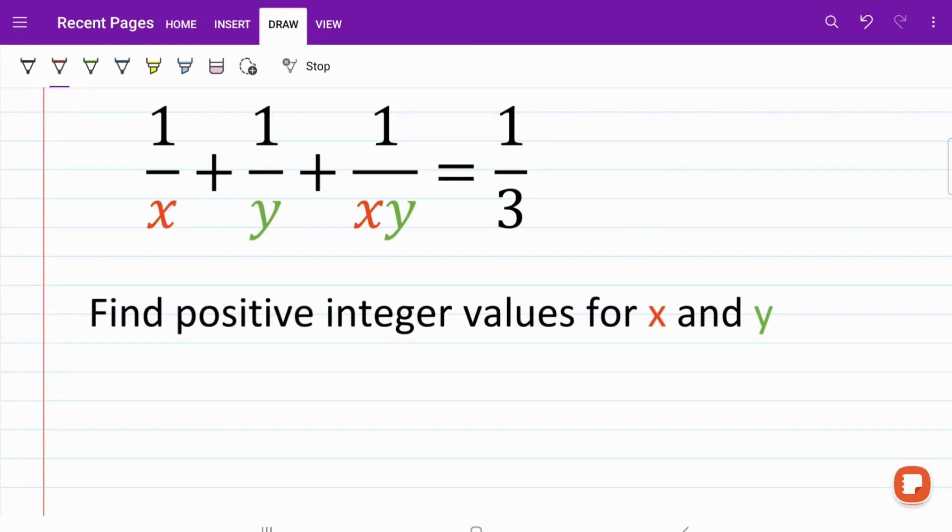When we're dealing with this kind of question, the general approach is to turn this into a product of two numbers which is equal to a certain value. In other words, we are going to be doing factorization. So how do we go about doing that? Let's first write down our equation.